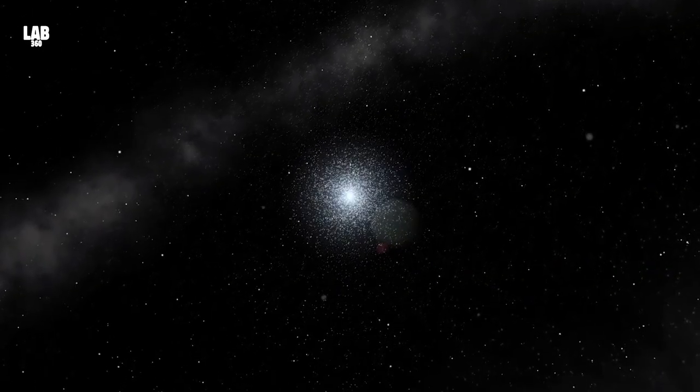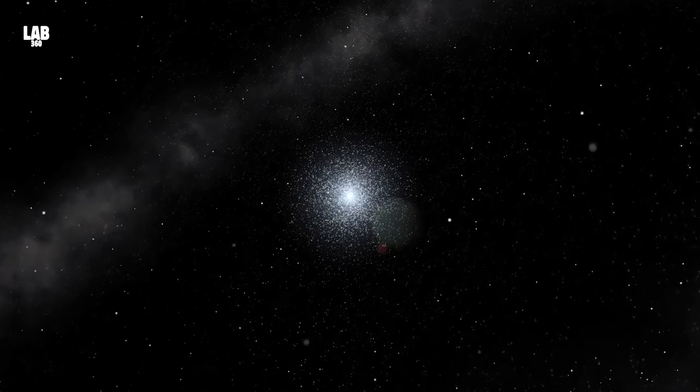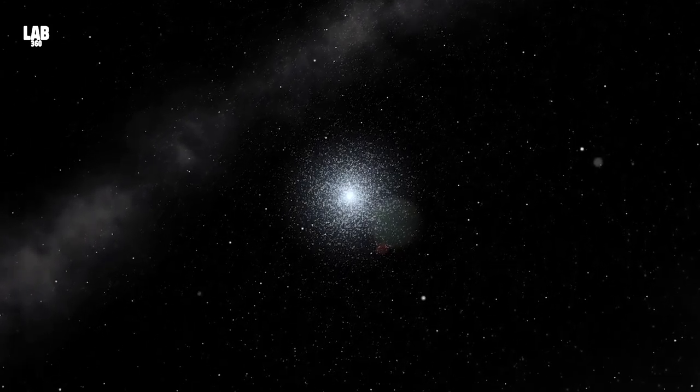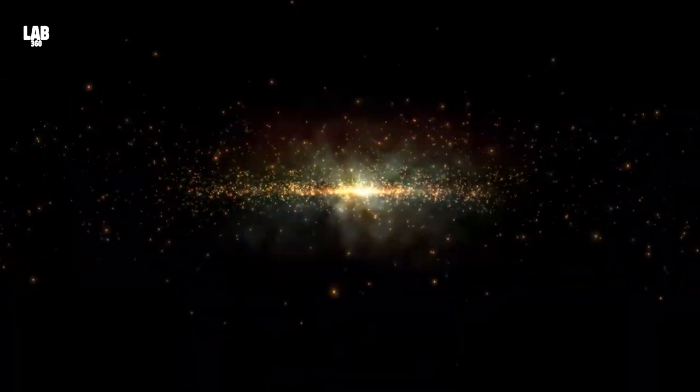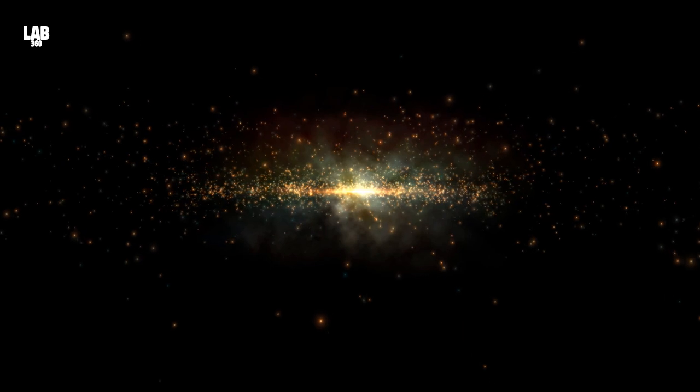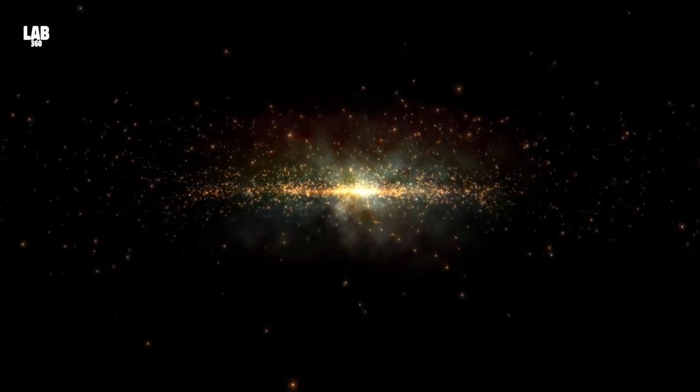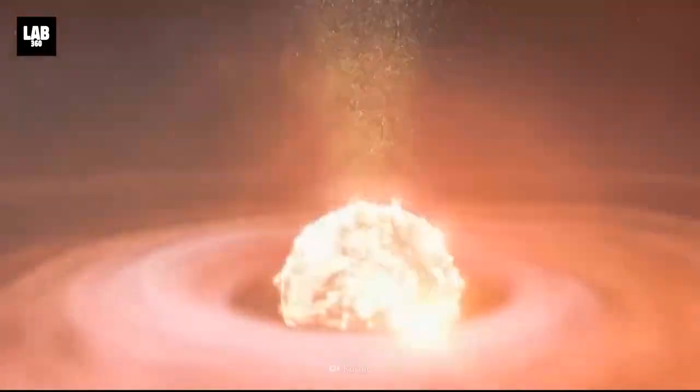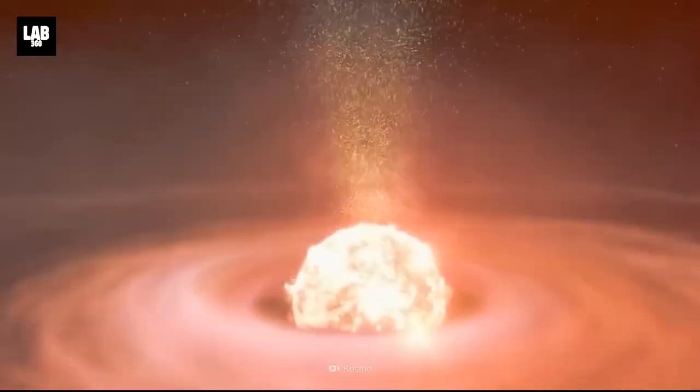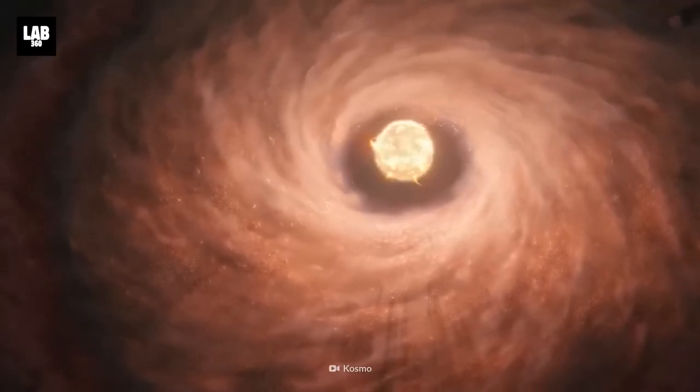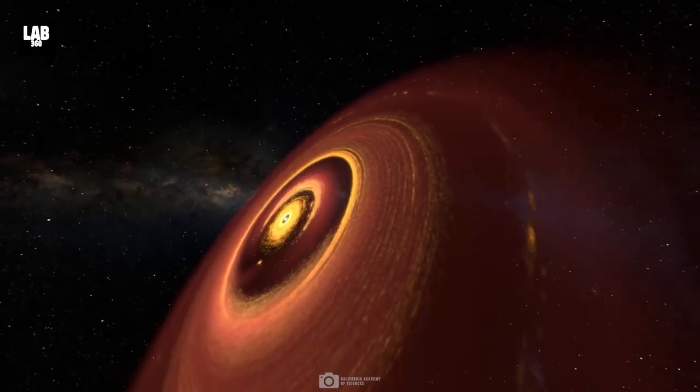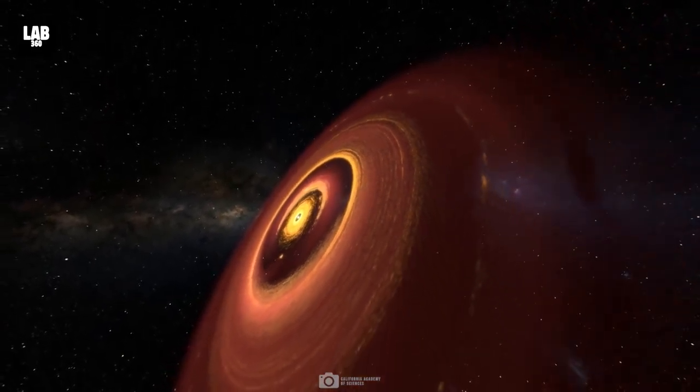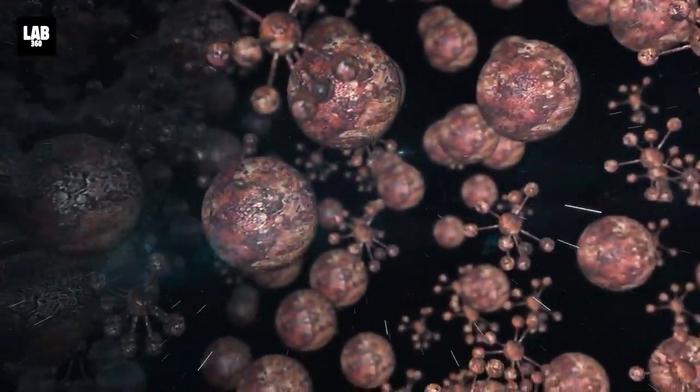The star clusters in question are called globular clusters, ancient celestial enclaves born approximately 13.4 billion years ago. They are not only the most massive and ancient of star groupings, but they also possess a peculiar characteristic, compositional variation among their stars. Picture this: stars born together, side by side, emerging from the same cosmic womb of collapsing gas and dust. Yet, despite their shared origins, they exhibit striking differences.